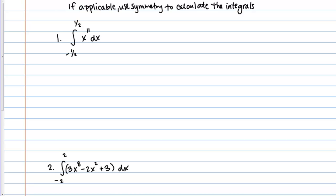The first example is the integral from negative 1/2 to 1/2 of x to the 11th dx. The fact that this has symmetric bounds, we have the form negative A to A, should clue us in that perhaps symmetry might be a way to simplify this integral.